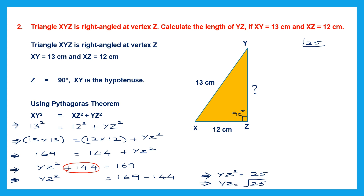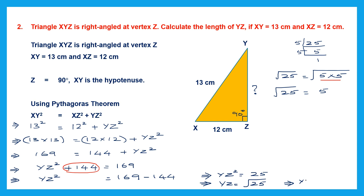We can confirm using prime factors of 25: 5 × 5, so √(5 × 5) — take one from the pair — gives 5. So the square root of 25 is 5, and YZ = 5 centimeters. That is our answer.